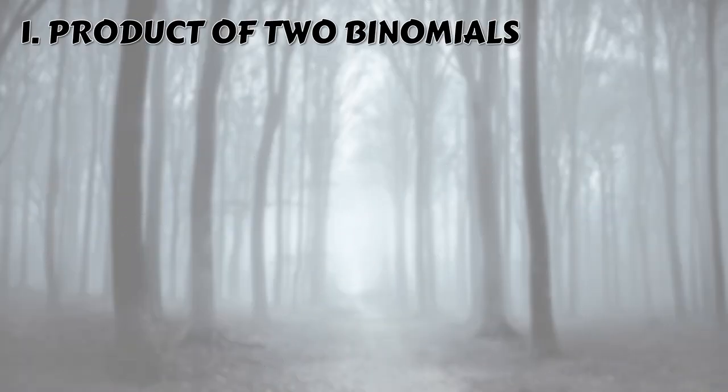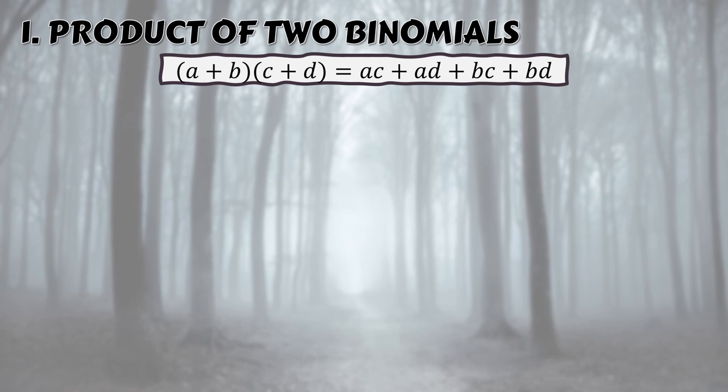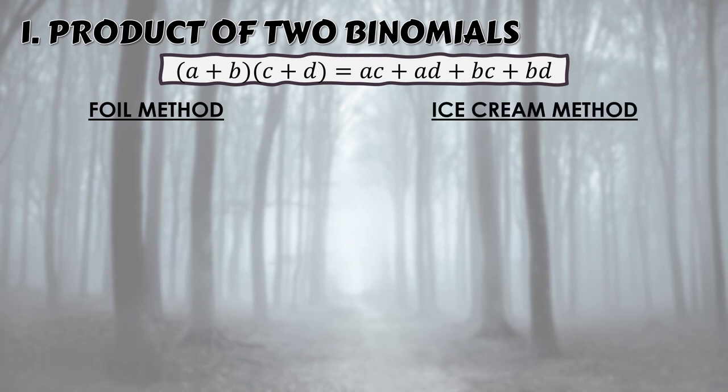The first case of special products is the product of two binomials. The formula is: (a + b)(c + d) = ac + ad + bc + bd. The formula can be a bit confusing, so to multiply two binomials, we will use the FOIL method and the ice cream method — whichever you find easier.